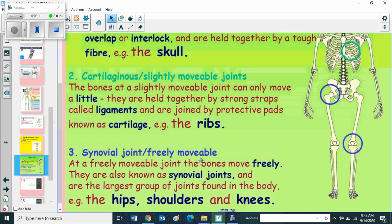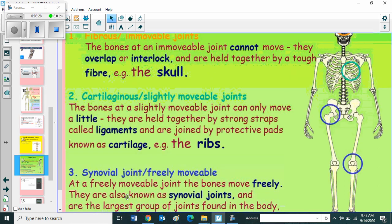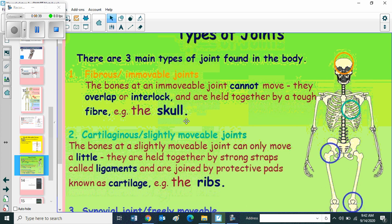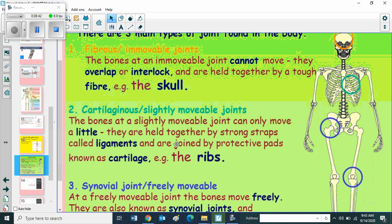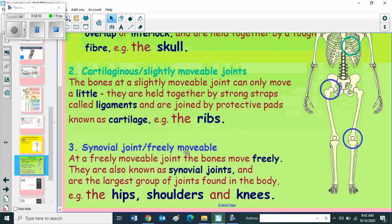Third one is synovial joint or freely movable. At a freely movable joint, the bones move freely. They are also known as synovial joints and are the largest group of joints found in the body. Example, the hips, shoulders and knees. So children, there are three main types of joints found in the body. They are fibrous or immovable joint, example the skull. This type of joints are immovable joints and cannot move. Then second one is cartilaginous or slightly movable joints. That can move but only slightly. Example, the ribs. Then third one is synovial joint or freely movable joint. That means we can move freely. Example, the hips, the shoulders and knees.